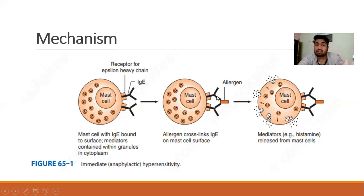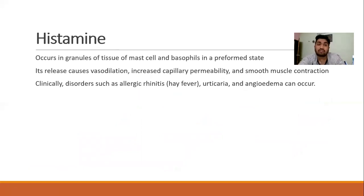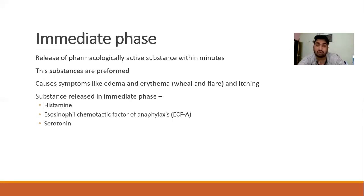After the release of substances, the release is divided into two phases: the immediate phase and the late phase. In the immediate phase, pharmacologically active substances are released within minutes. These substances are preformed and cause symptoms like edema, erythema, and itching. Substances released in the immediate phase are mainly histamine, eosinophil chemotactic factor of anaphylaxis (ECF-A), and serotonin.